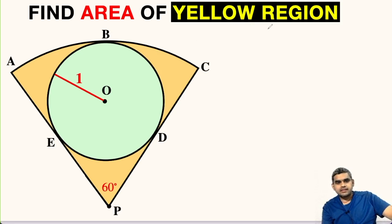In this question, we have to find the area of this yellow region. It is a sector of 60 degree central angle and inside it, we have a circle of radius 1 unit.